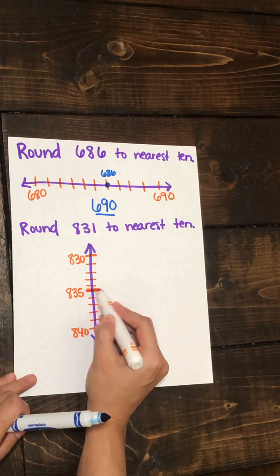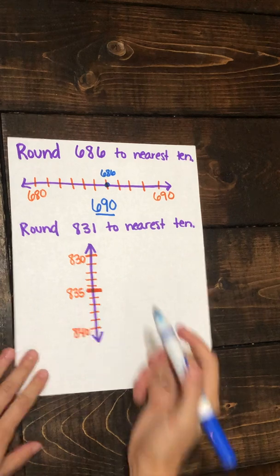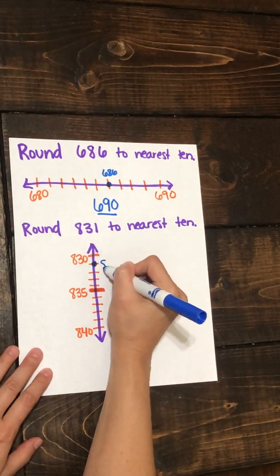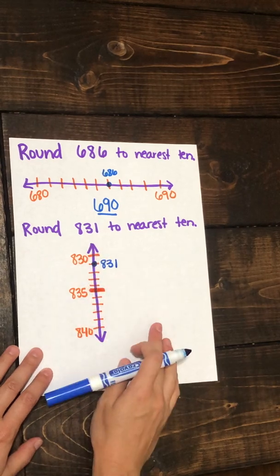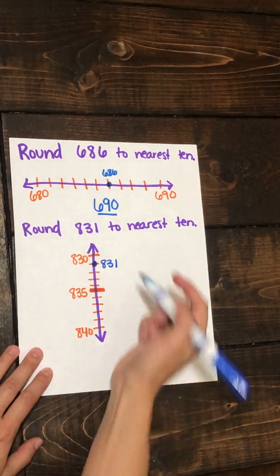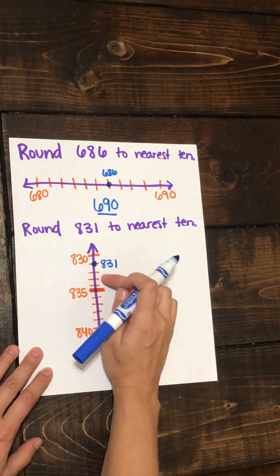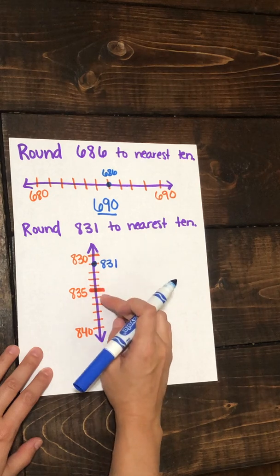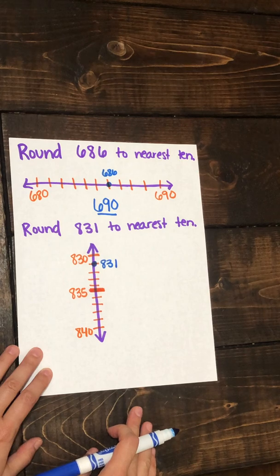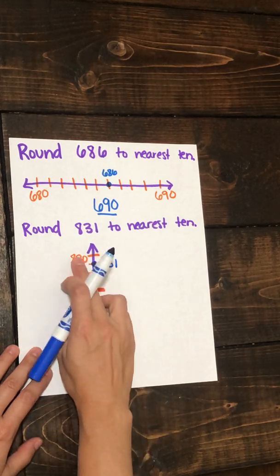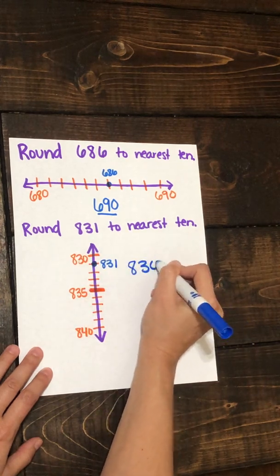We know this is our halfway point. So let's plot 831. Here is 831. Is 831 closer to 830 or 840? We see it's only one space away from 830, and 9 spaces away from 840. So 831 rounded to the nearest ten is 830.